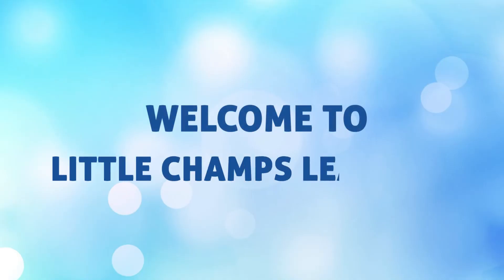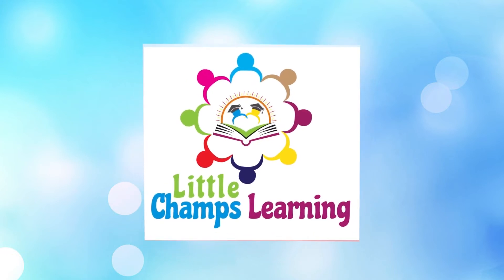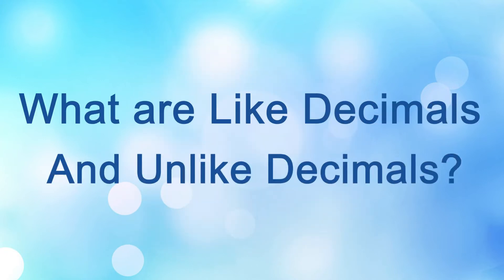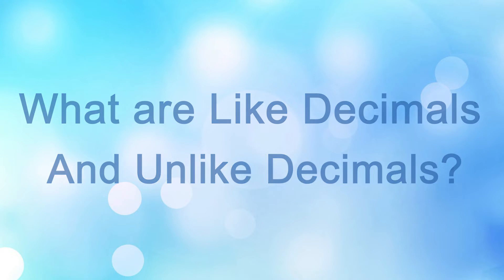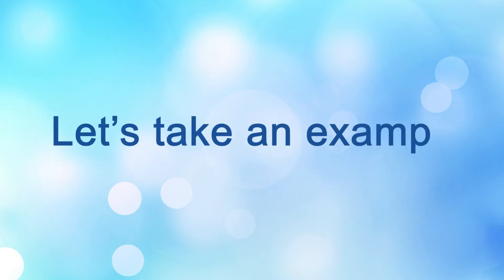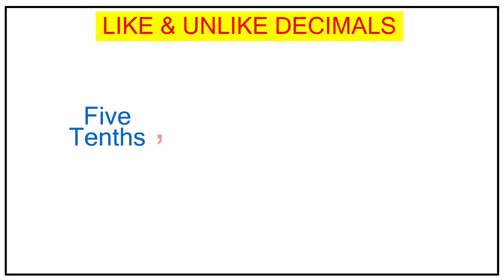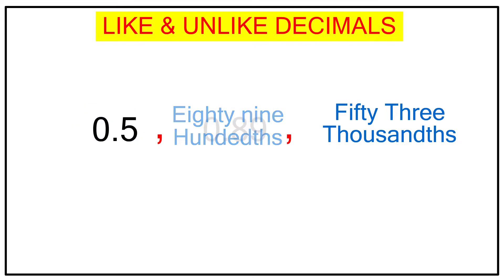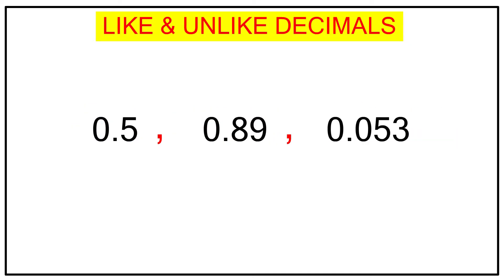Hello and welcome back to Little Champs Learning. In this video today we will look into what are like decimals and unlike decimals. Without wasting any time, let me consider one example: 5 tenths, 89 hundredths, and 53 thousandths — that is 0.5, 0.89, and 0.053.